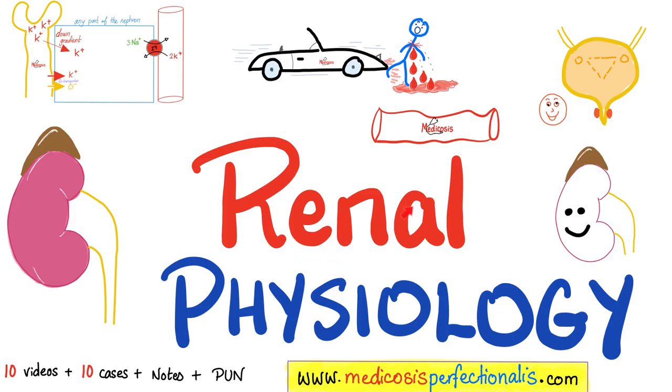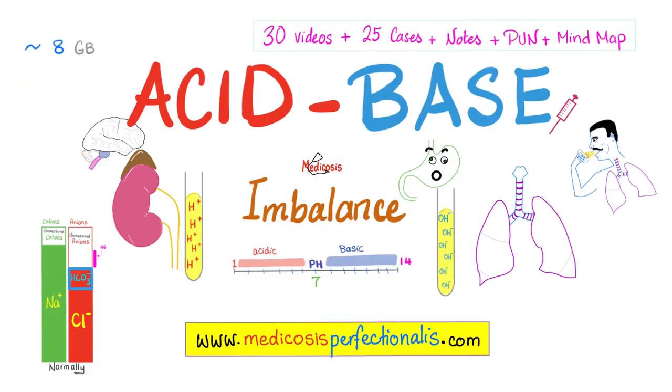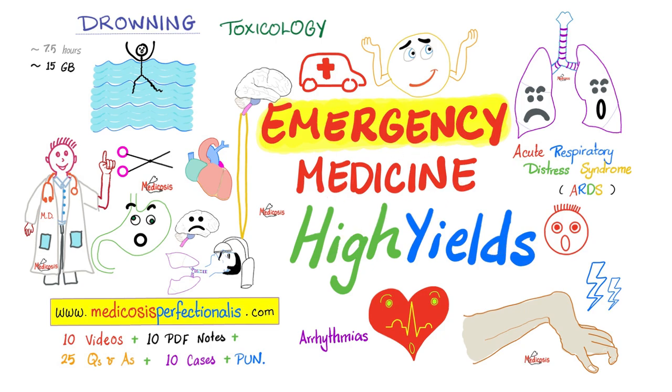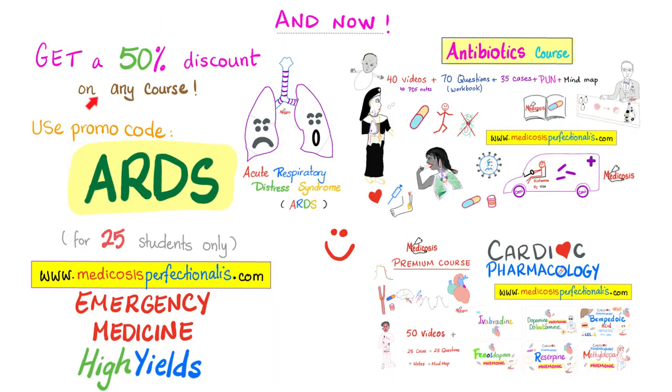If you want to learn more about kidney physiology, I have a course on renal physiology on my website, mediocisperfectalis.com, which you can download once and keep forever. I also have another premium course on the acid-base disturbances that happen in your body, the best in the world. Most doctors are lacking in this area, with the exceptions of very few nephrologists. Or my brand new surgery high-yields course, as well as my emergency medicine high-yields course. All of them are at mediocisperfectalis.com. You can get a 50% discount on any course by using discount code ARDS.